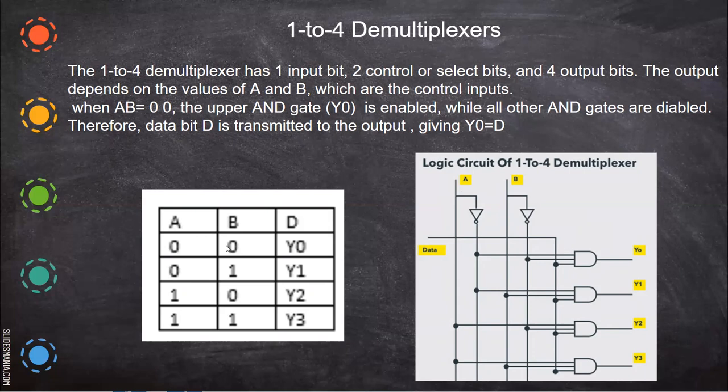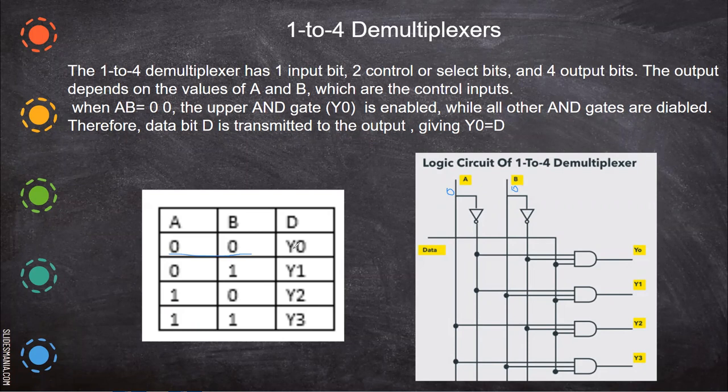When A is equal to zero and B equals zero, what happens? The one which is selected is Y0. Now we'll see how it is selected. Let us imagine this is zero and this is zero. How Y0 is selected is what we are going to see.